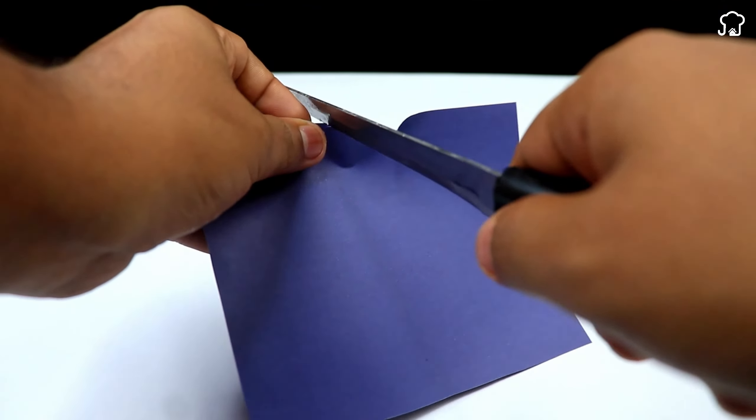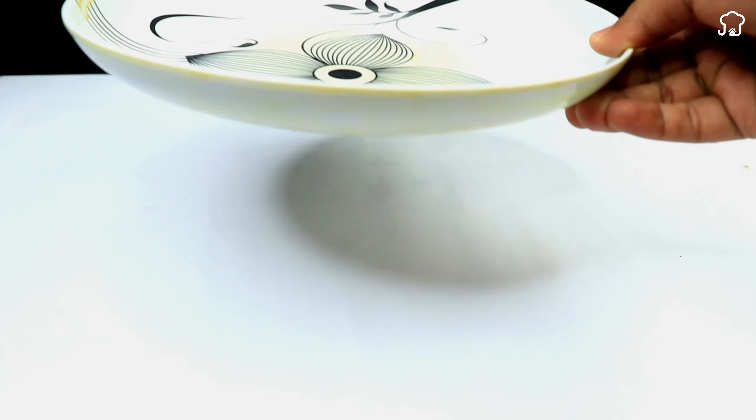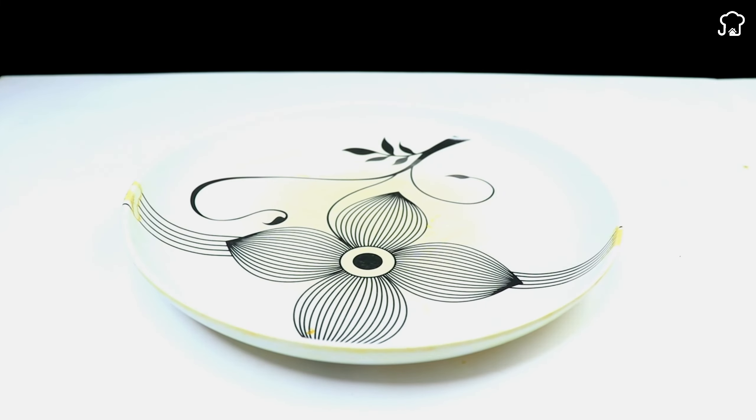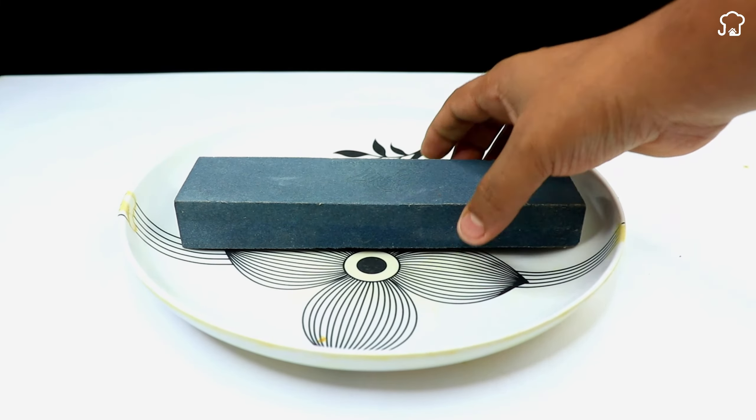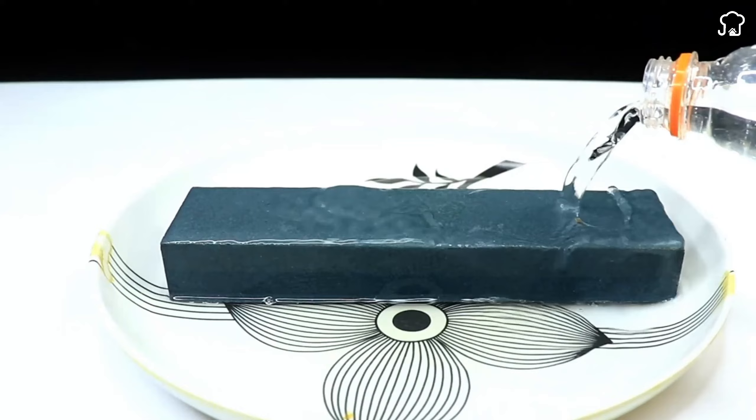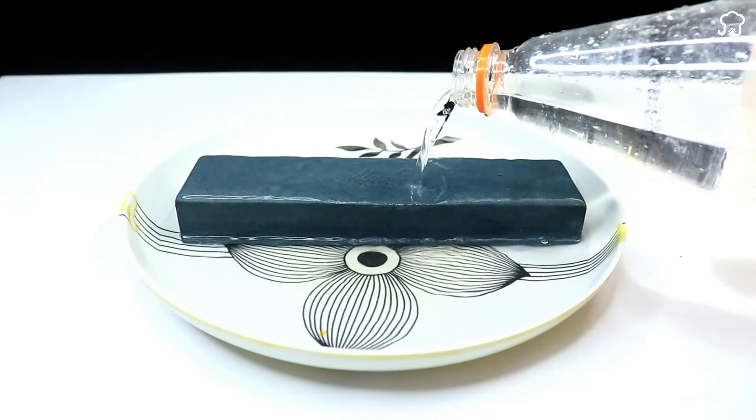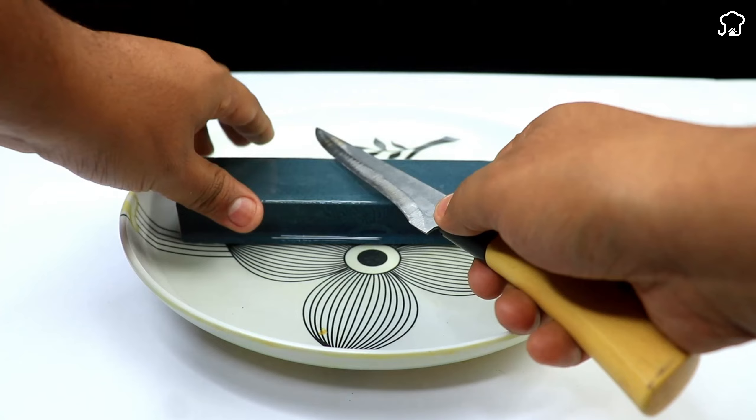Next, we will use a sanding stone moistened with water, on which we will make L-shaped movements. This process will help restore the sharpness of the knife through the controlled abrasion offered by the stone.